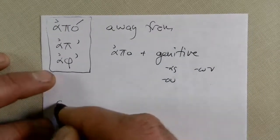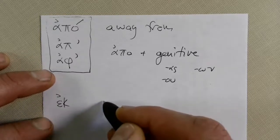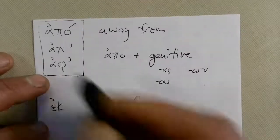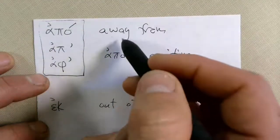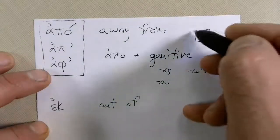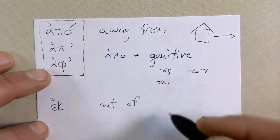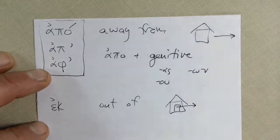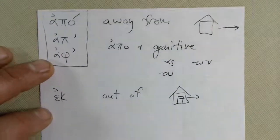Another one. Ek. Ek means out of. Ek is like Apo. This one means away from, this one means out of. So away from the house means you're going that way. Out of the house meaning you start in and then you leave. Those are slightly different, away from and out of.